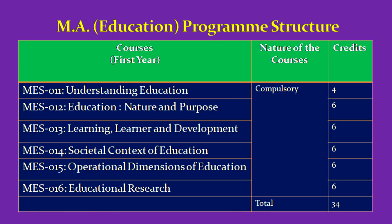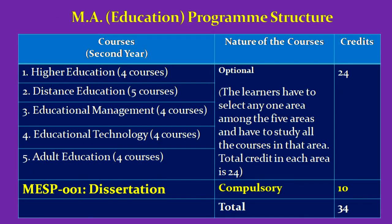Briefly, touching upon the structure of this program: in the first year you have to study 34 credits across 6 different courses — MES11, 12, 13, 14, 15, and 16. In the second year you have to study one elective area from 5 available areas, totaling 24 credits, plus the compulsory dissertation component, MESP001, which is 10 credits, making 34 credits in the second year.